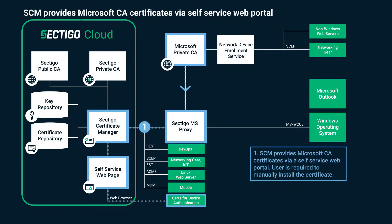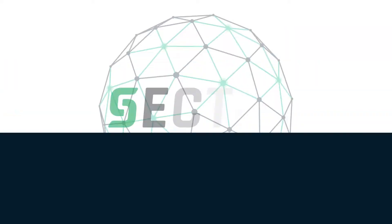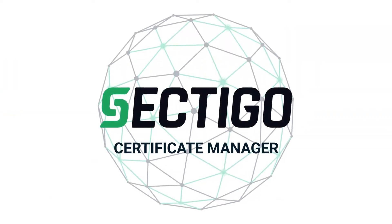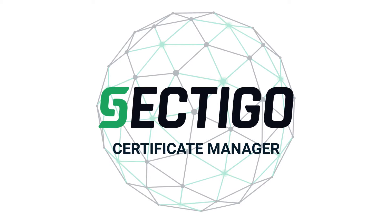Certificate Manager also provides certificates issued from a Microsoft CA through its web UI that functions much like the Network Device Enrollment Service. Certificates must be manually installed, but are still recorded in the certificate repository. Augment your Microsoft CA and protect non-Windows devices throughout the enterprise with Sectigo Certificate Manager.